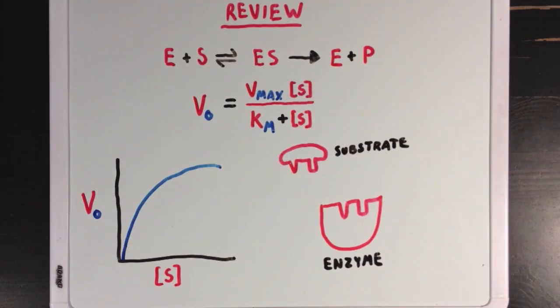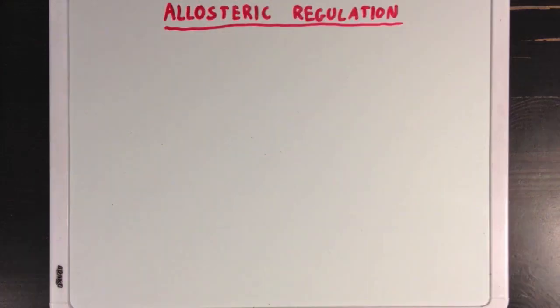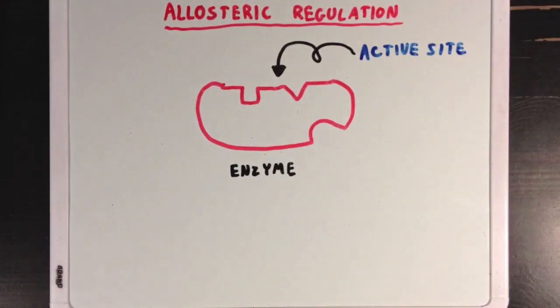Also remember that substrates will typically bind to enzymes at the active site. So, what do we mean when we say allosteric regulation? Well, we know that enzymes usually have an active site where substrates can bind, but enzymes can also have what we call an allosteric site.